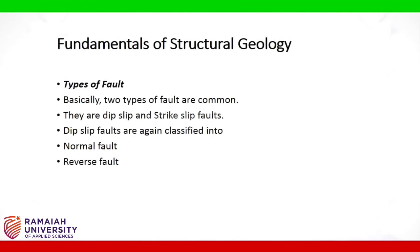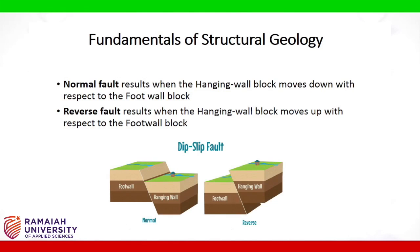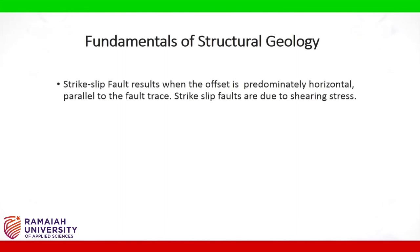Types of fault: basically two types are common — dip-slip and strike-slip faults. Dip-slip faults are classified into normal fault and reverse fault. Normal fault results when the hanging wall block moves down with respect to the foot wall block. Reverse fault results when the hanging wall block moves up with respect to the foot wall block. Horst and Graben are block faulting features associated with normal faults. Horst represents a block pushed upward by faulting; Graben is a block that has dropped. Strike-slip fault results when the offset is predominantly horizontal parallel to the fault trace, due to shearing stress.